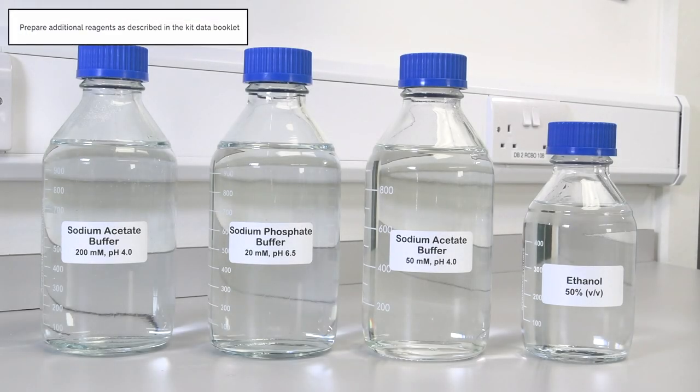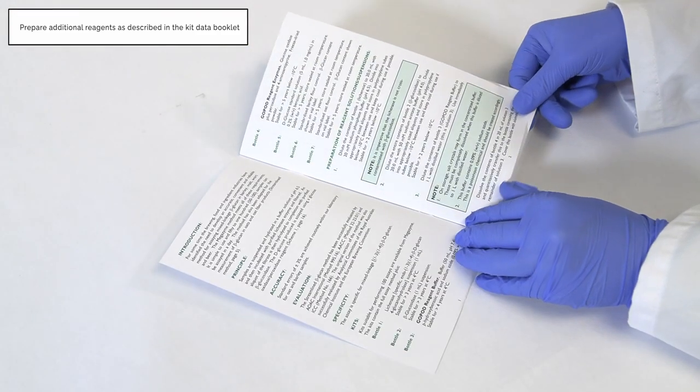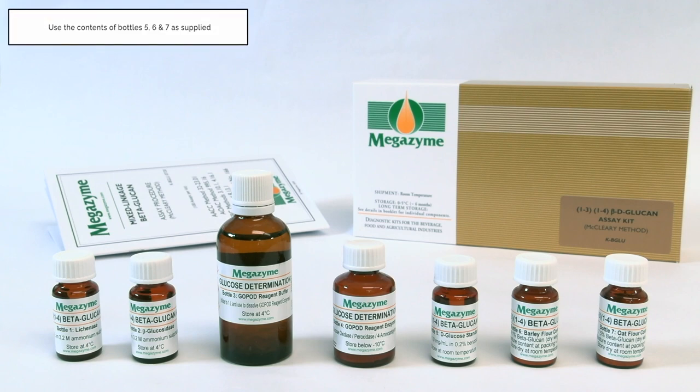Prior to sample analysis, prepare the required additional reagents as described in the kit data booklet. Subsequently, once all of the additional reagents have been made, the kit components should be prepared, and once prepared, they are ready for use in the assay procedure. Use the contents of bottles 5, 6 and 7 as supplied.